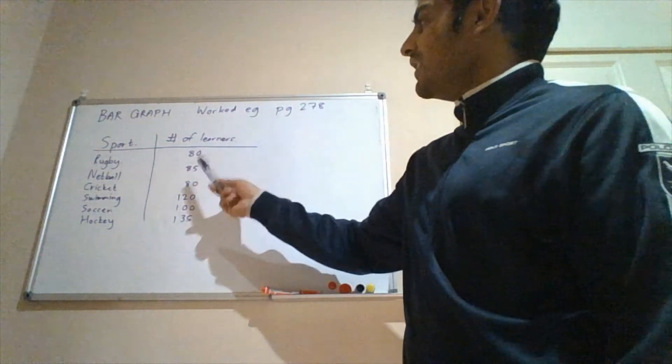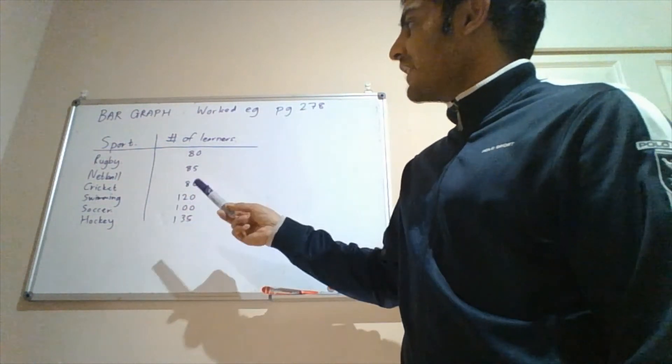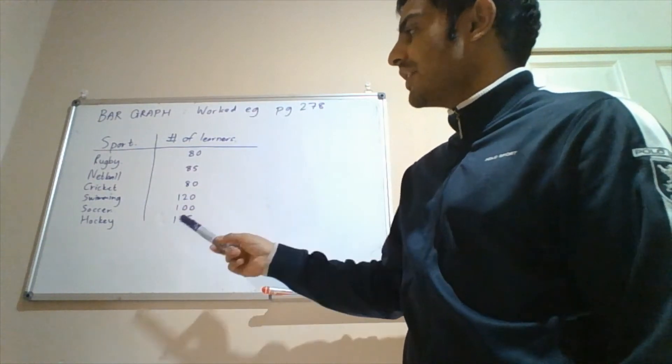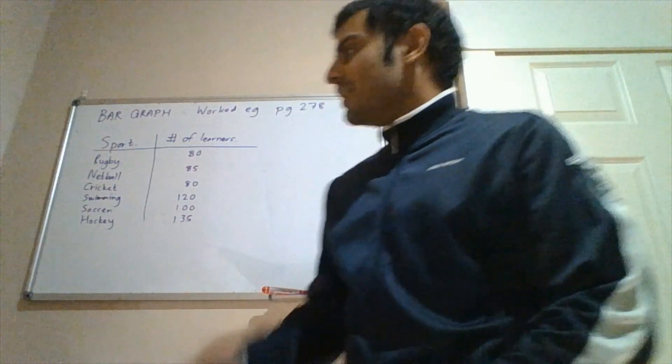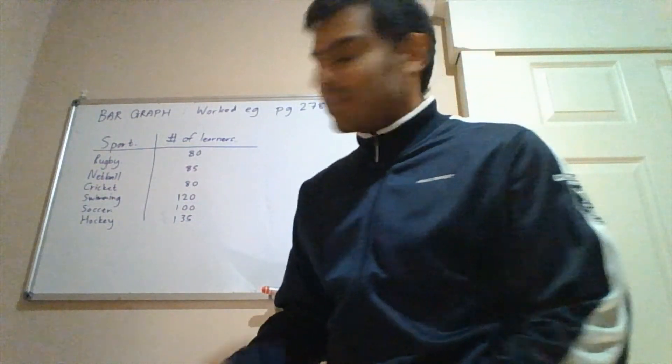So for each sport, I've added together the number of girls and boys that participate. So you can just double check these values. We've got for rugby, 80, netball, 85, cricket, 80, swimming, 120, soccer, 100, and hockey, 135. So now I'm going to plot this on a bar graph.